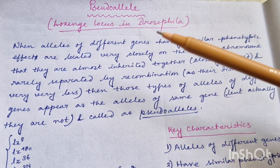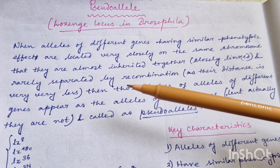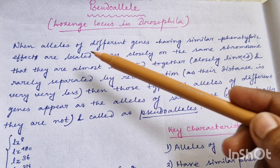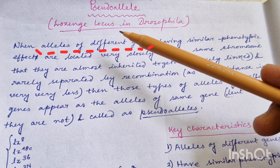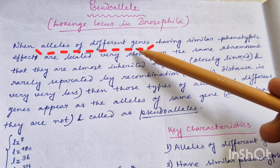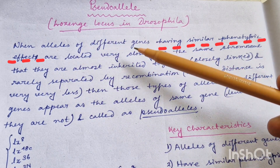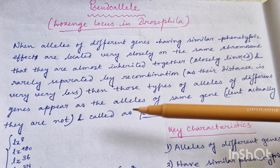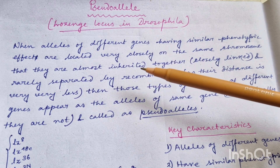What is a pseudoallele? Before knowing what a pseudoallele is, we must know what an allele is. Alleles are the alternative forms of the same gene. But whenever we are talking about pseudoalleles, we are talking about alleles of different genes. This point is very, very important. In case of pseudoalleles, we are talking about alleles of different genes which have similar phenotypic effect.